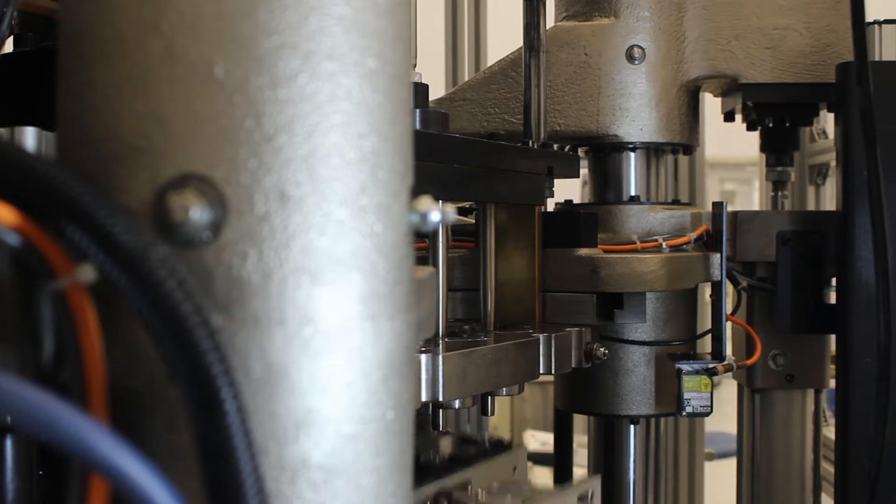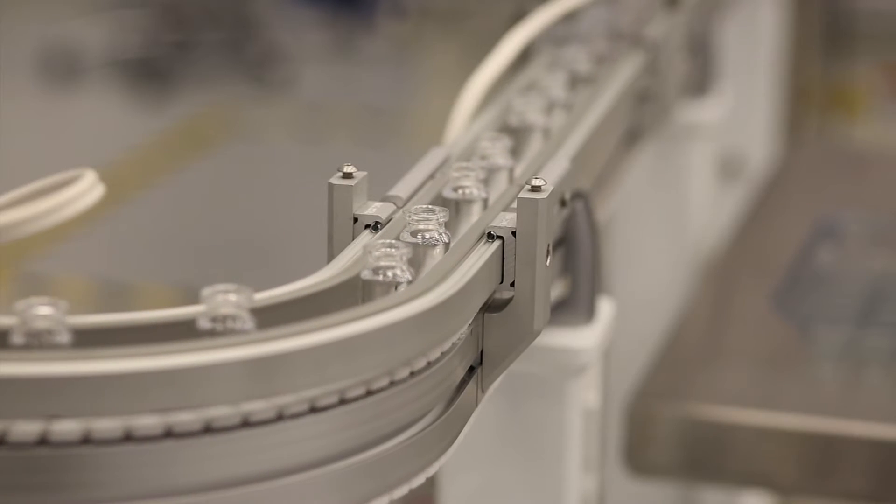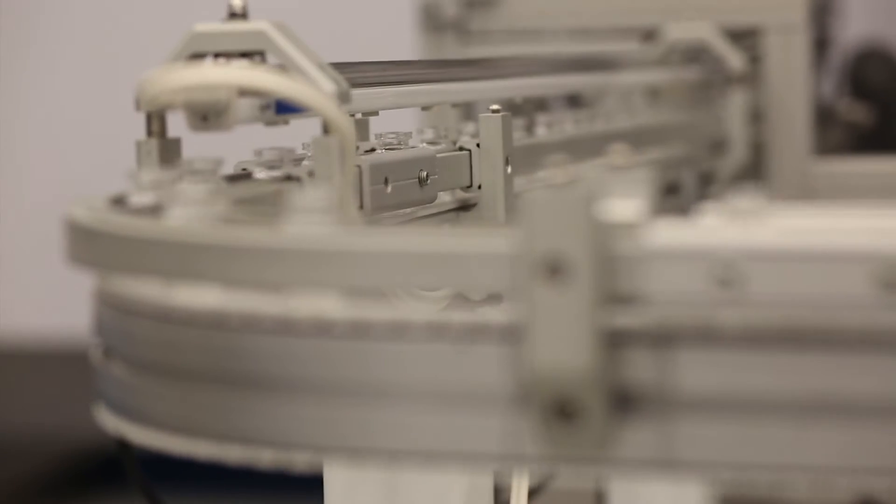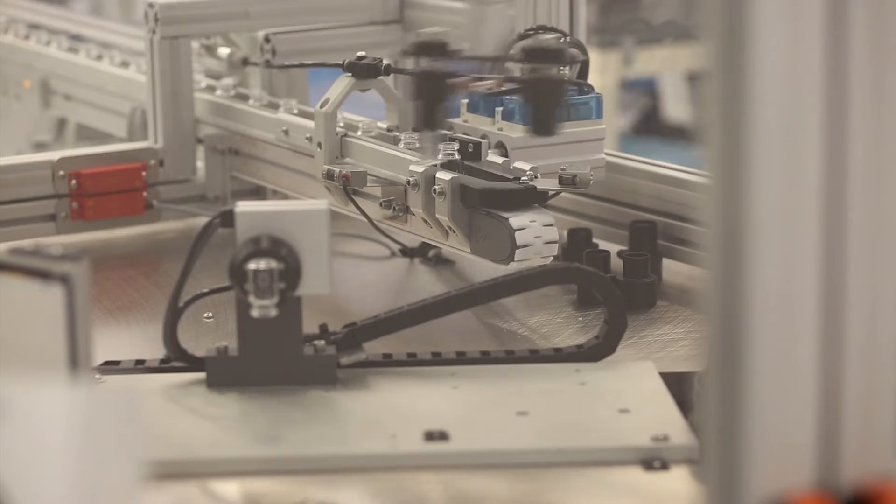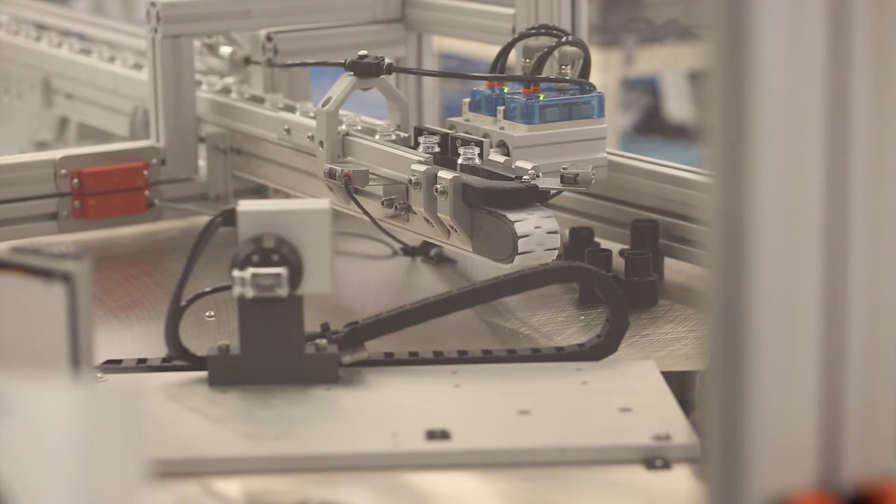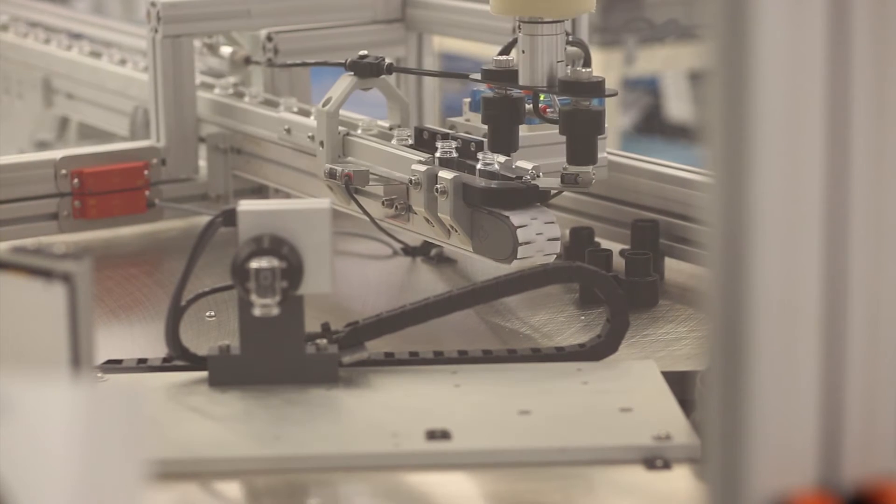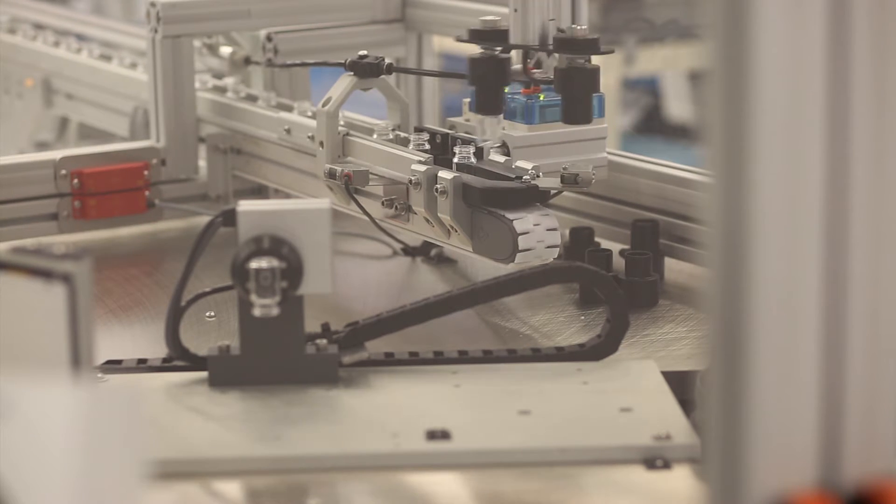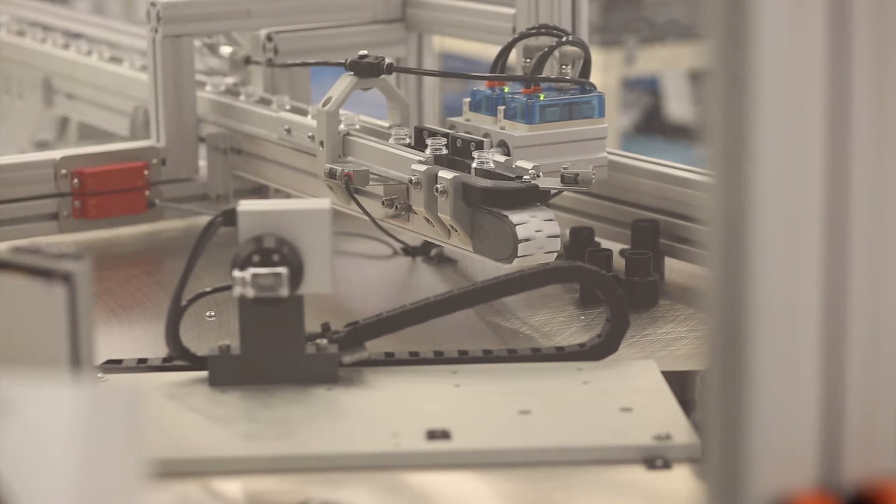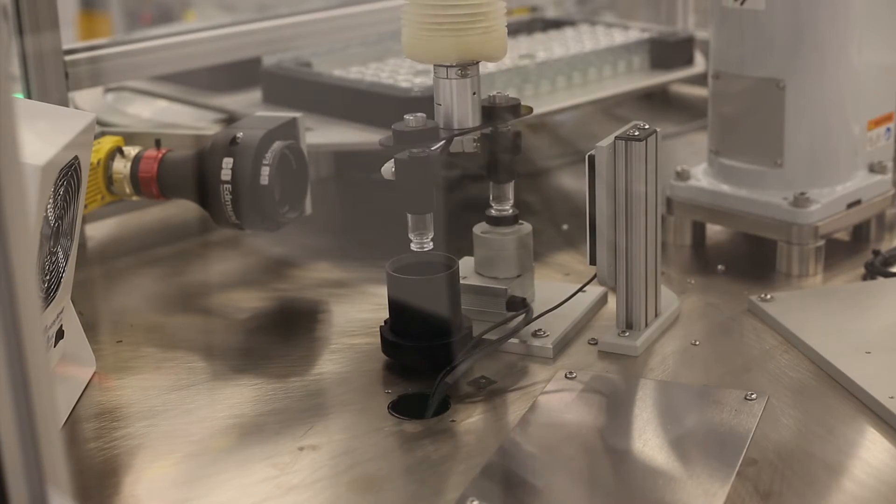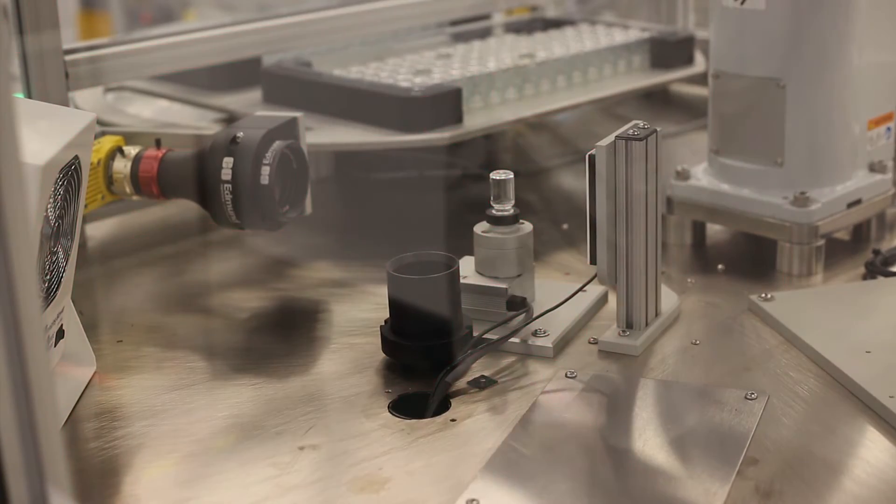Vials are then transported by conveyor to a fully automated inspection and unique identification labeling machine. The 100% camera inspection system looks for any physical or dimensional defects in vials, which are then visually 100% inspected again by a trained technician.